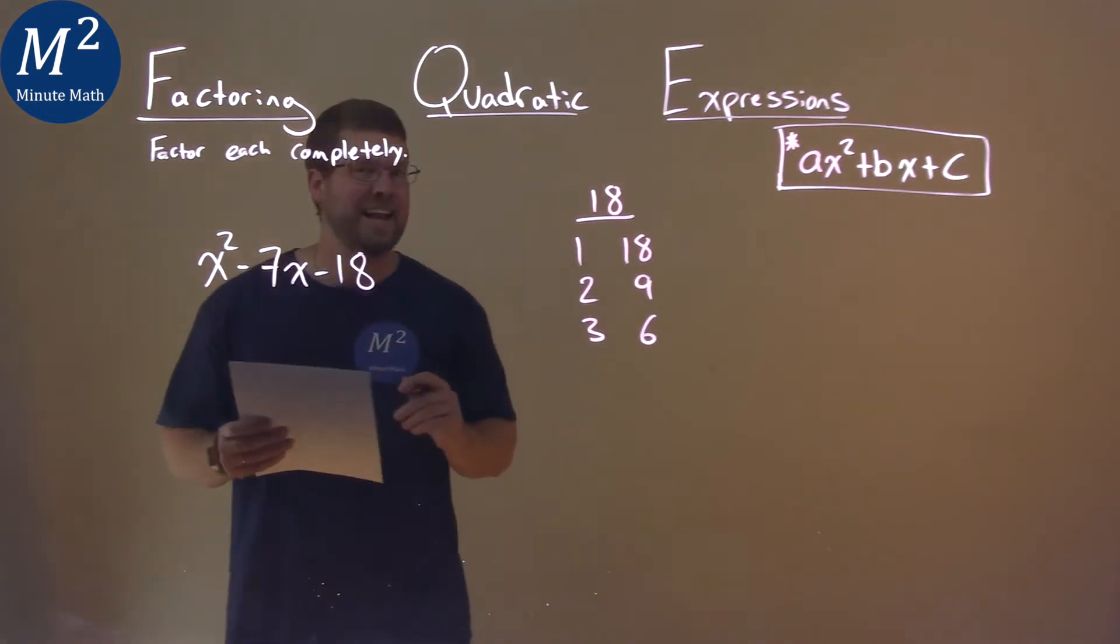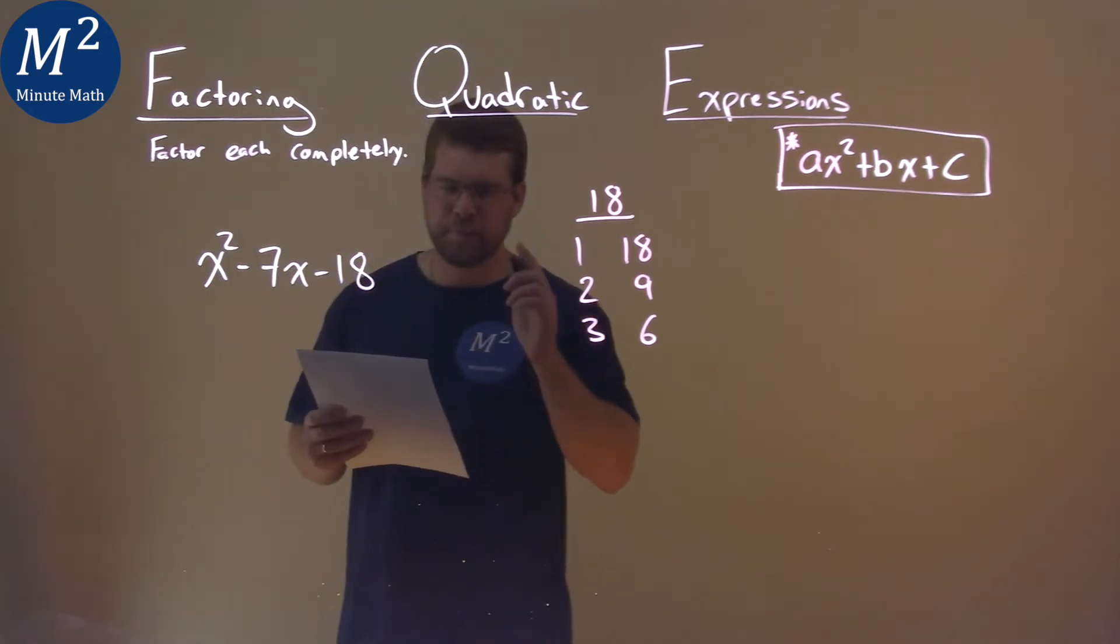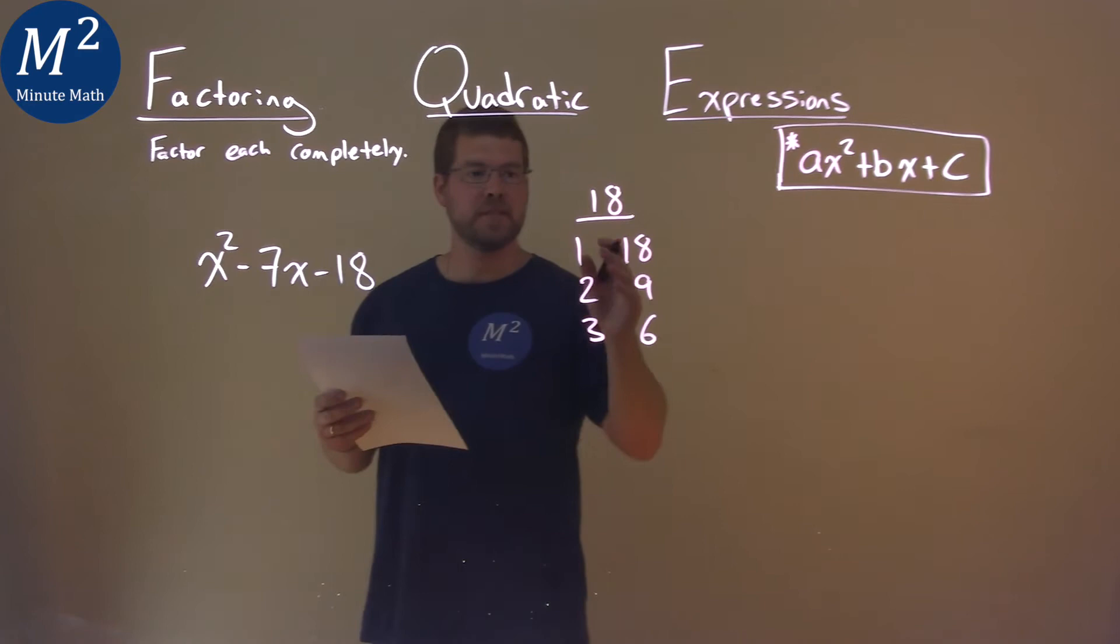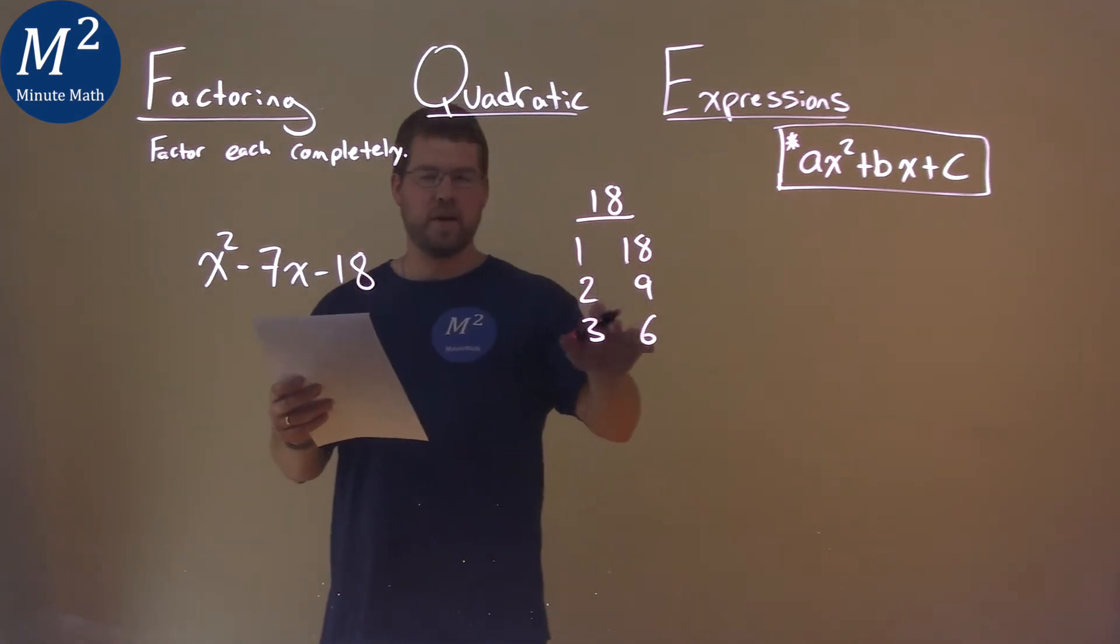Now they tell us this is a negative 18. So it's a negative 18, so one of these numbers will have to be negative. We're going to see what two numbers multiply to be this c value. So that's what we found here, and then we're going to see which ones add to be negative 7.